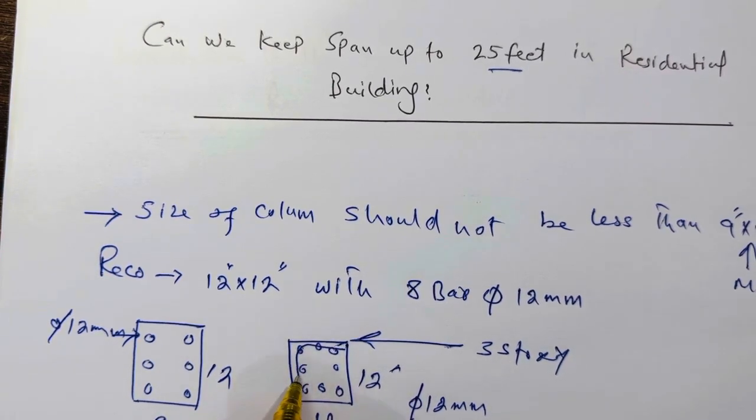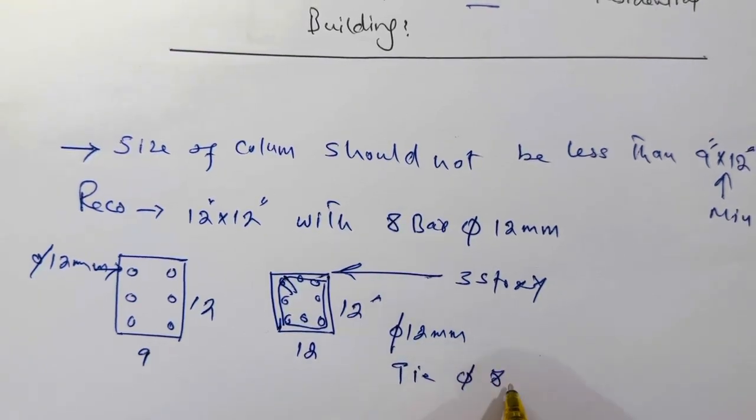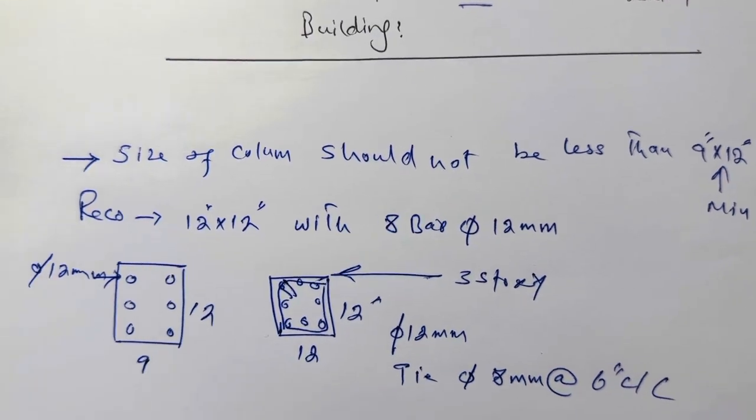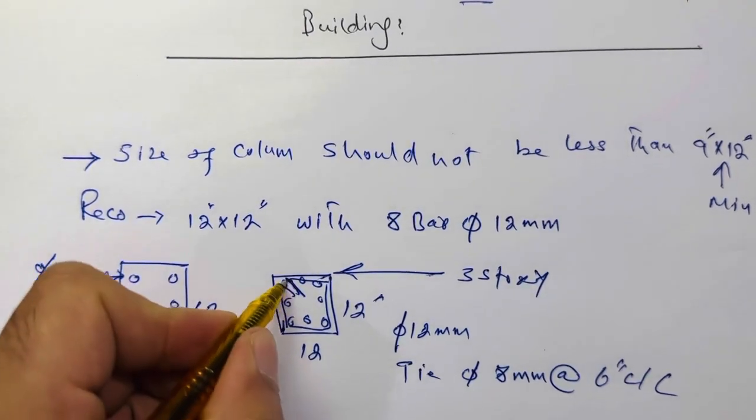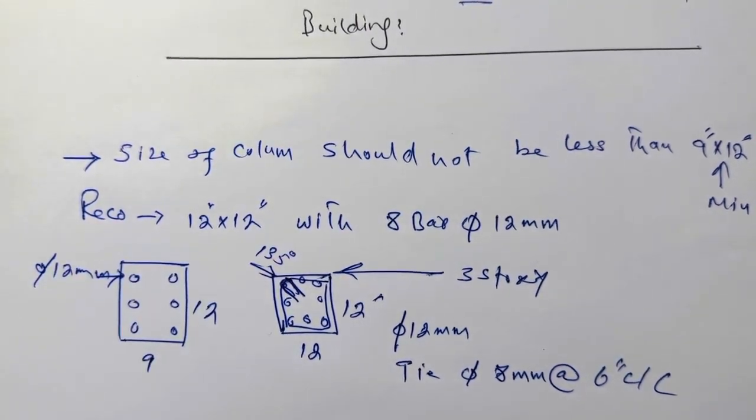And here you can see this is the tie. So the tie diameter should be 8 millimeter with the spacing of 6 inches center to center. Next, these hooks should be bent on 135 degree angle.